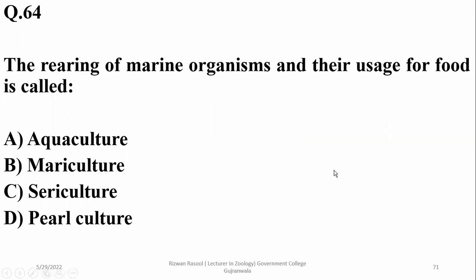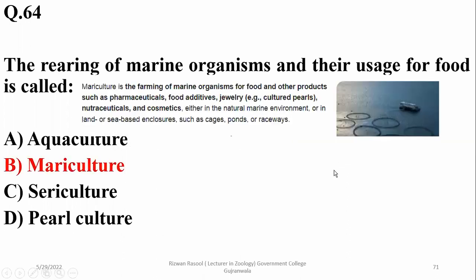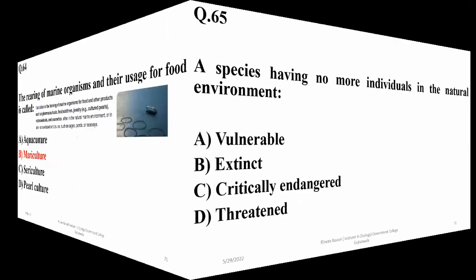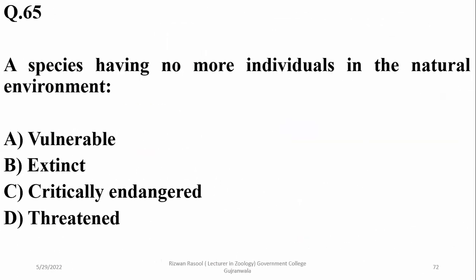Question 64: the rearing of marine organisms and their usage for food is called mariculture. Sericulture refers to silk culture, and aquaculture is the general term. Question 65: a species having no more individuals in the natural environment is declared as extinct.